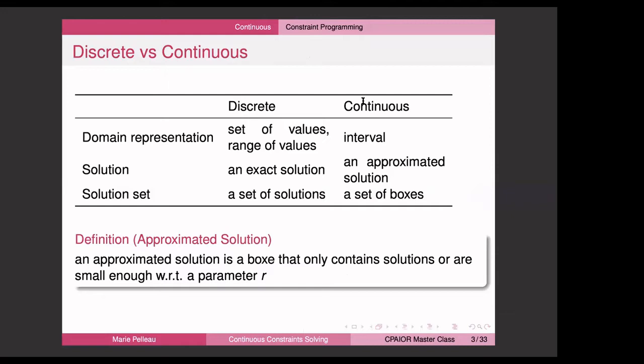To solve this problem, you need to be able to represent your variables. In the discrete case, you have a set of values or range of values to represent your domain. In continuous, you will have intervals. On the discrete side, you can compute the exact solution and your solution set is a set of solutions. In continuous, you approximate the solution. An approximate solution is a box that only contains solutions or is small enough with respect to a parameter, and your solution set will be a set of boxes.